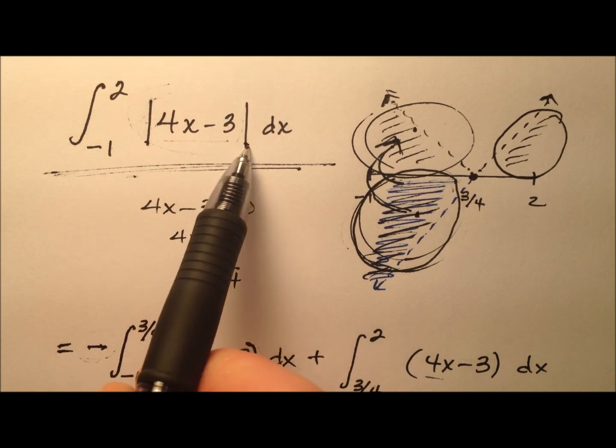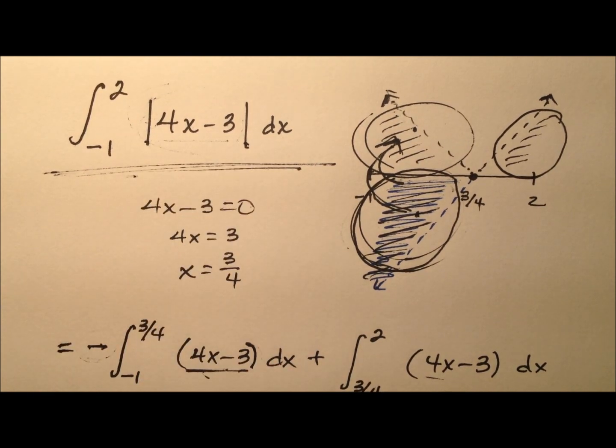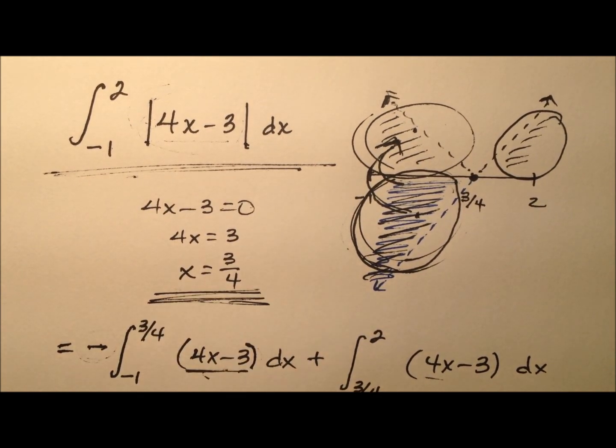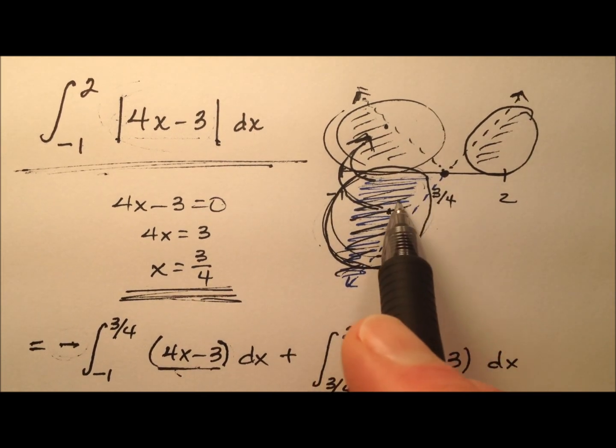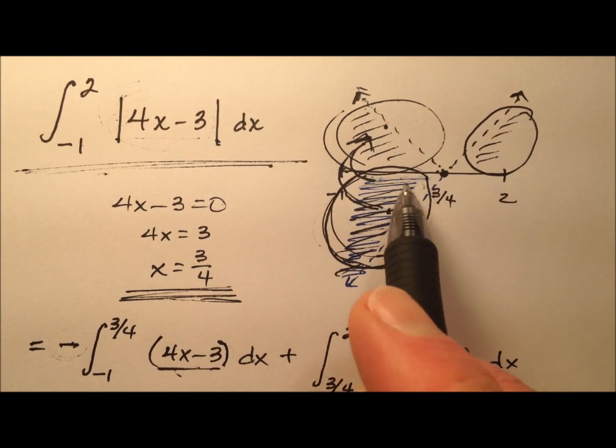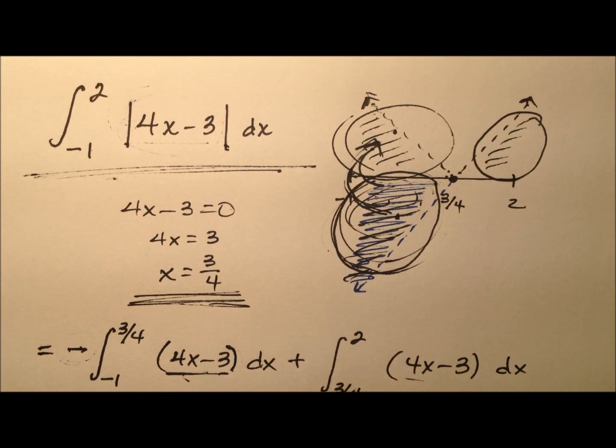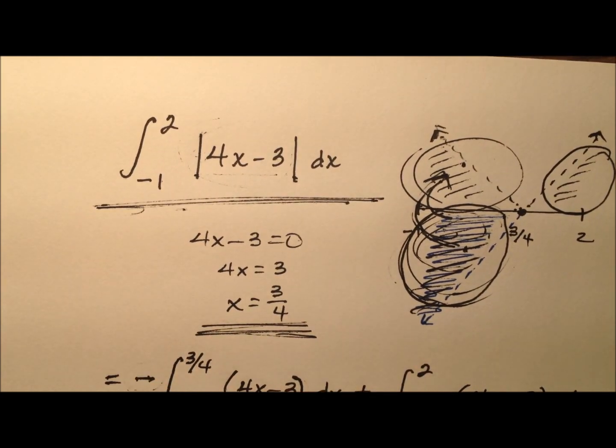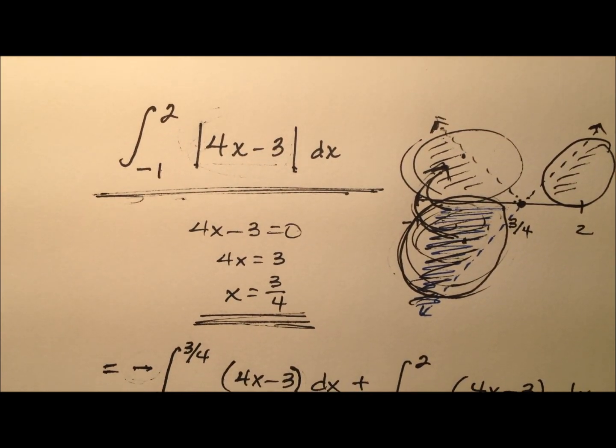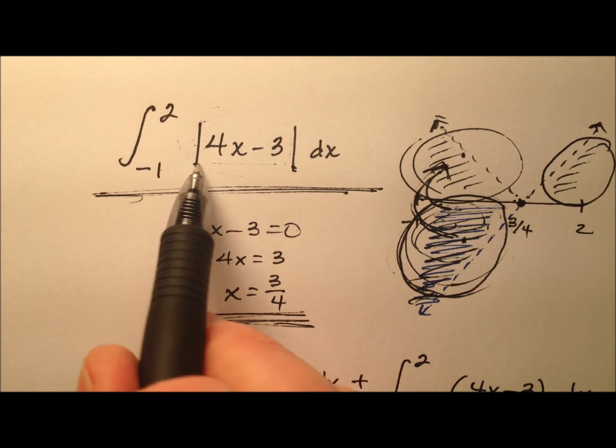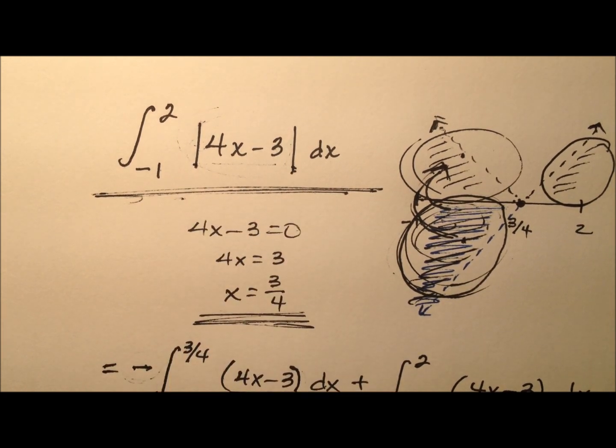So when you have these absolute value integrals, you'll find any x-intercepts first. And then you will determine between those x-intercepts where is our graph negative. And then you'll just ensure that you subtract that negative area out, so it'll end up being a positive area. So there's a quick overview of evaluating definite integrals that contain absolute value integrands.